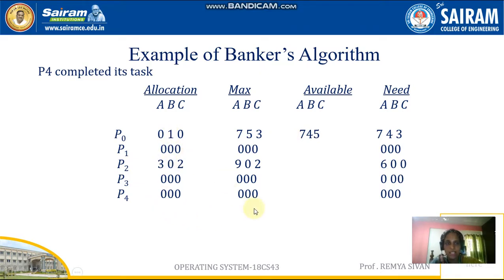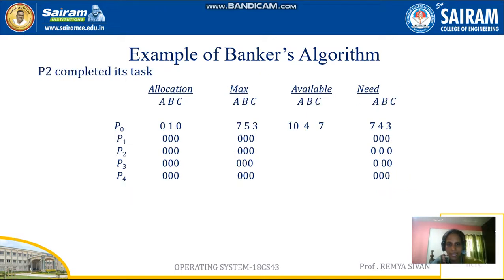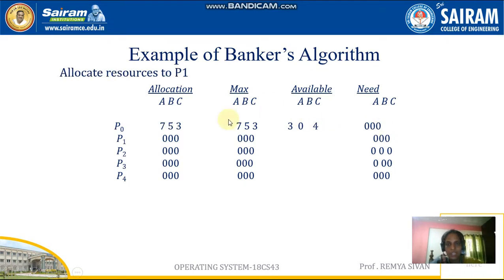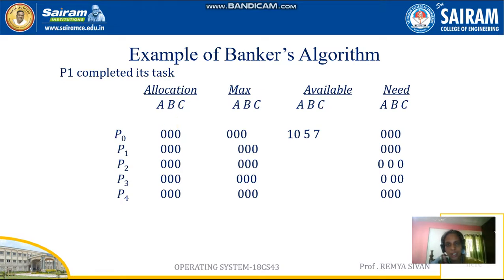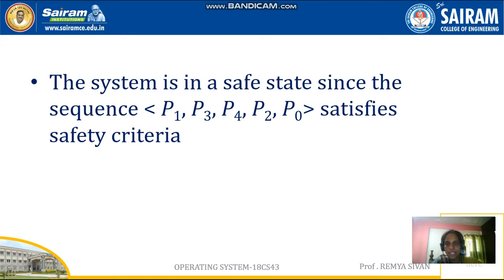Now P0 and P2 remain. P0 needs 7, 4, 3 and P2 needs 6, 0, 0. P2 requires only 6As — we now have 6. So P2 gets all the resources, completes its task, and releases resources back to the available set. Then P0 gets its needed 7A, 4B, 3C, completes, and the system is safe. We were able to produce a safe sequence.